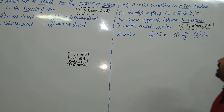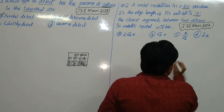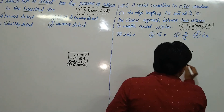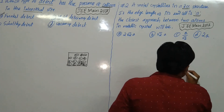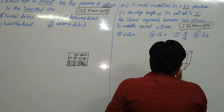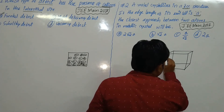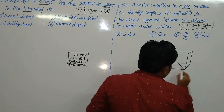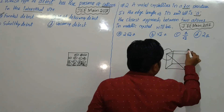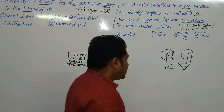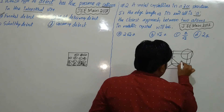We have an FCC unit cell. Let us identify where the particles are present in this FCC unit cell. The particles are present at the corners of the cube and also at the center of each face.